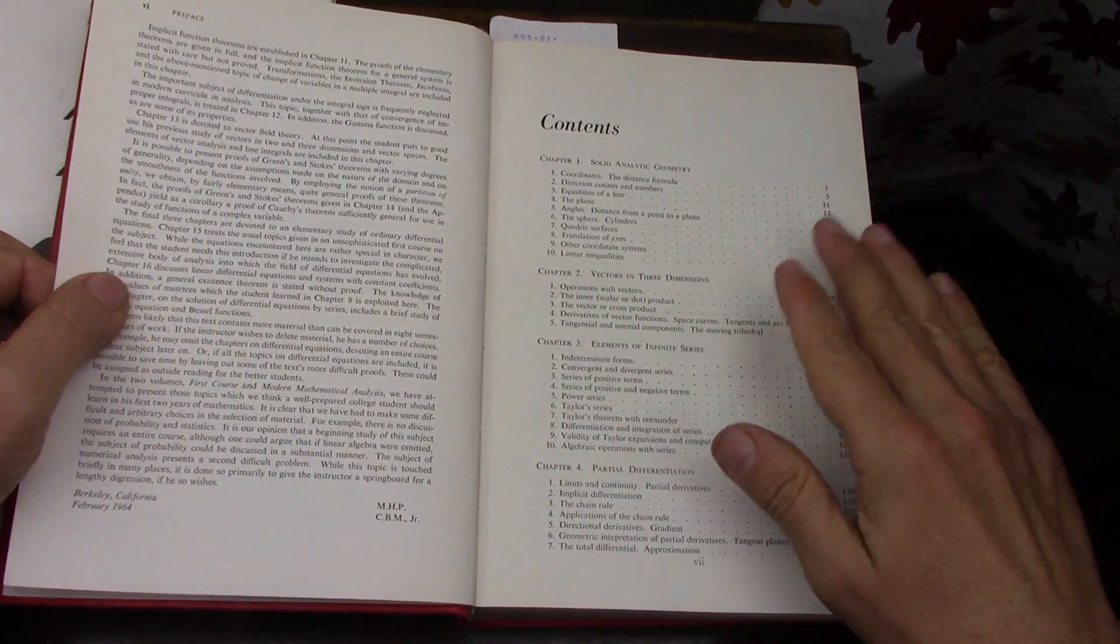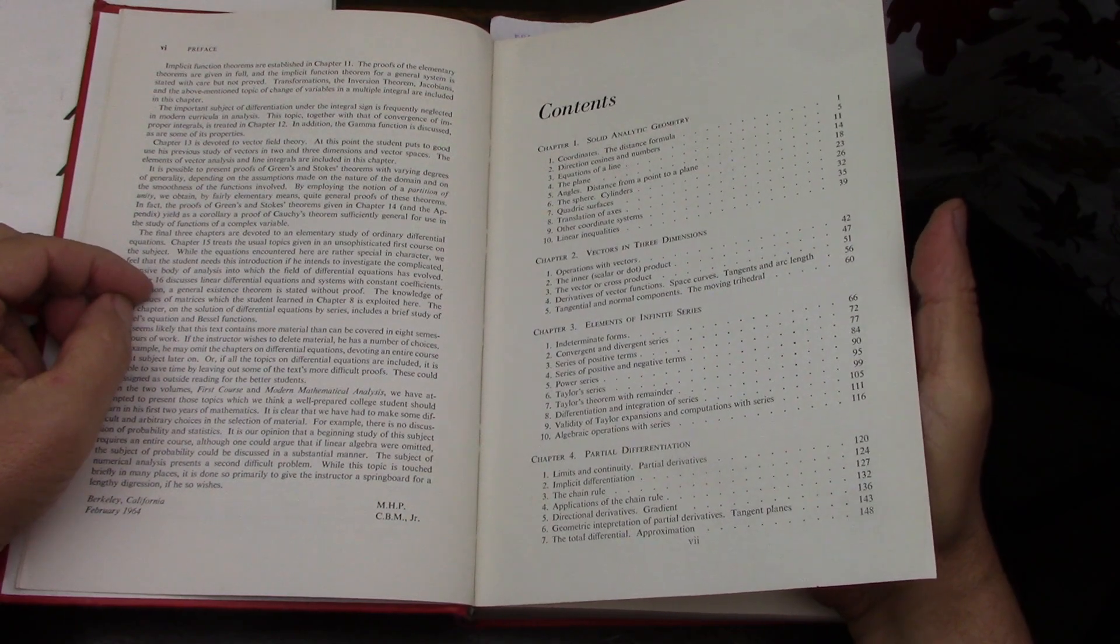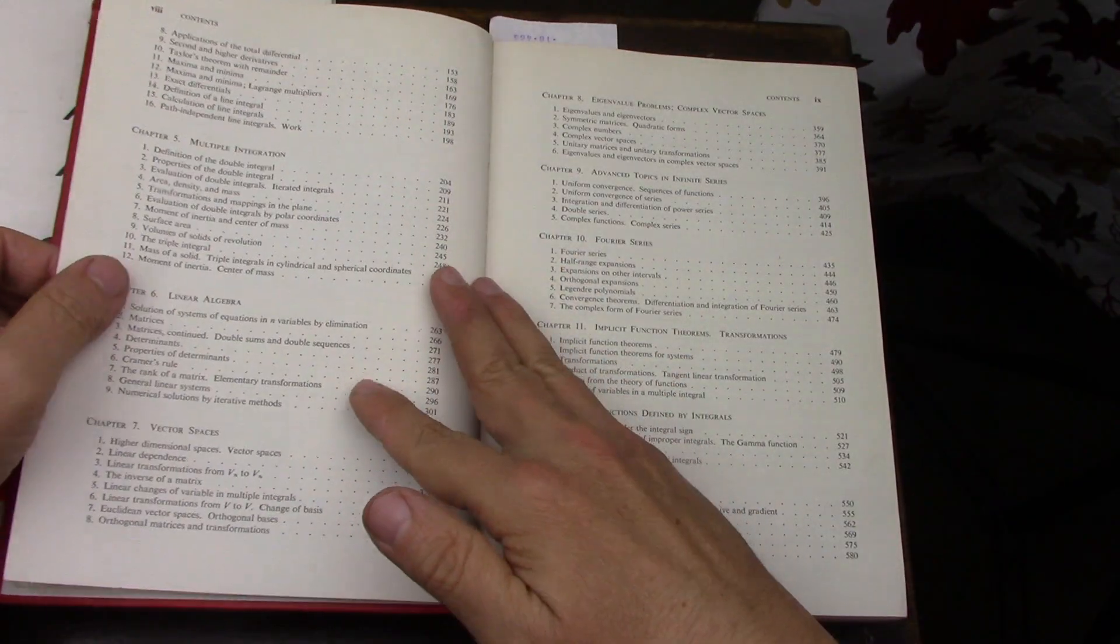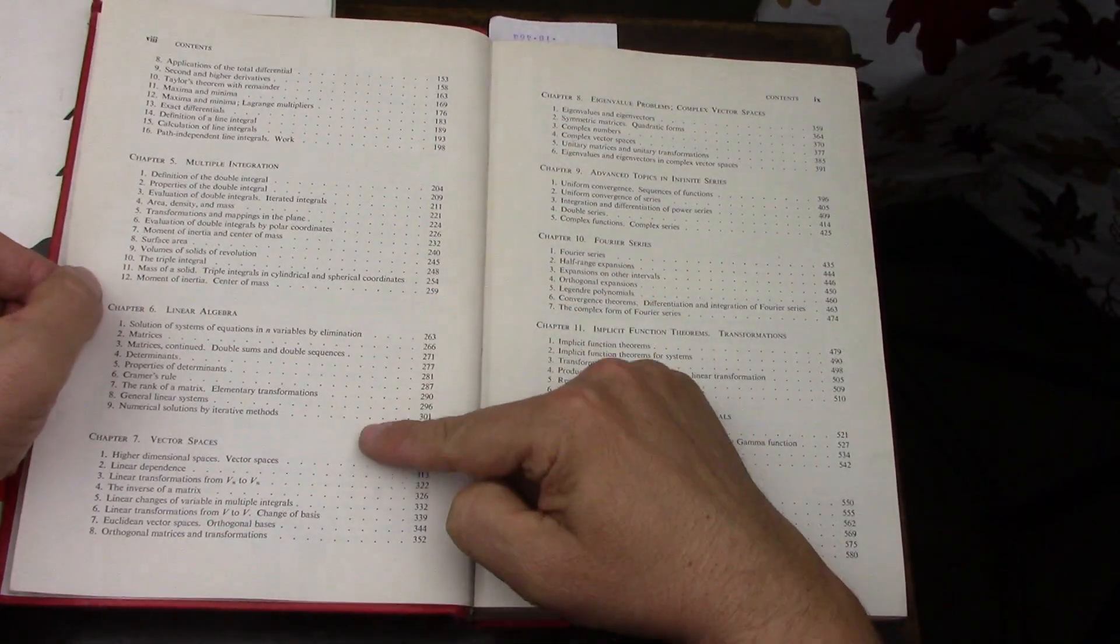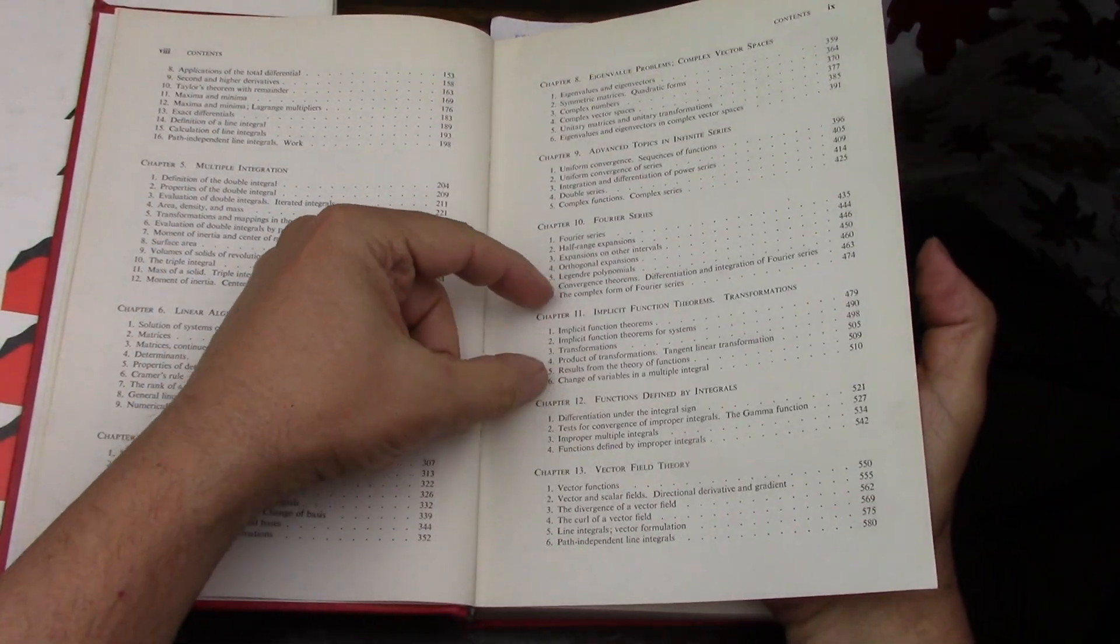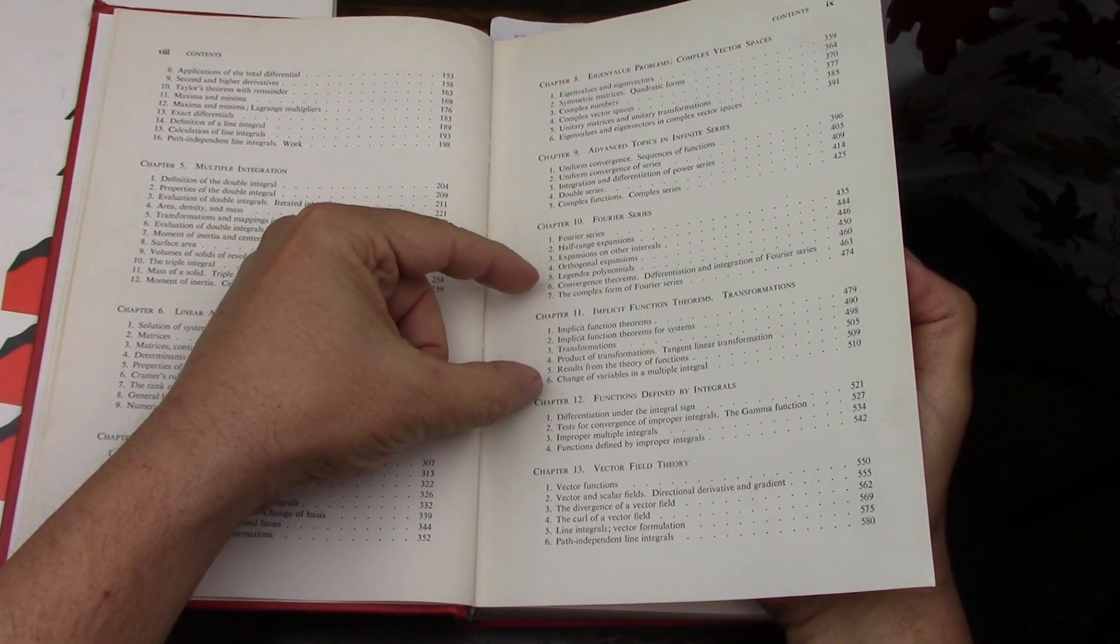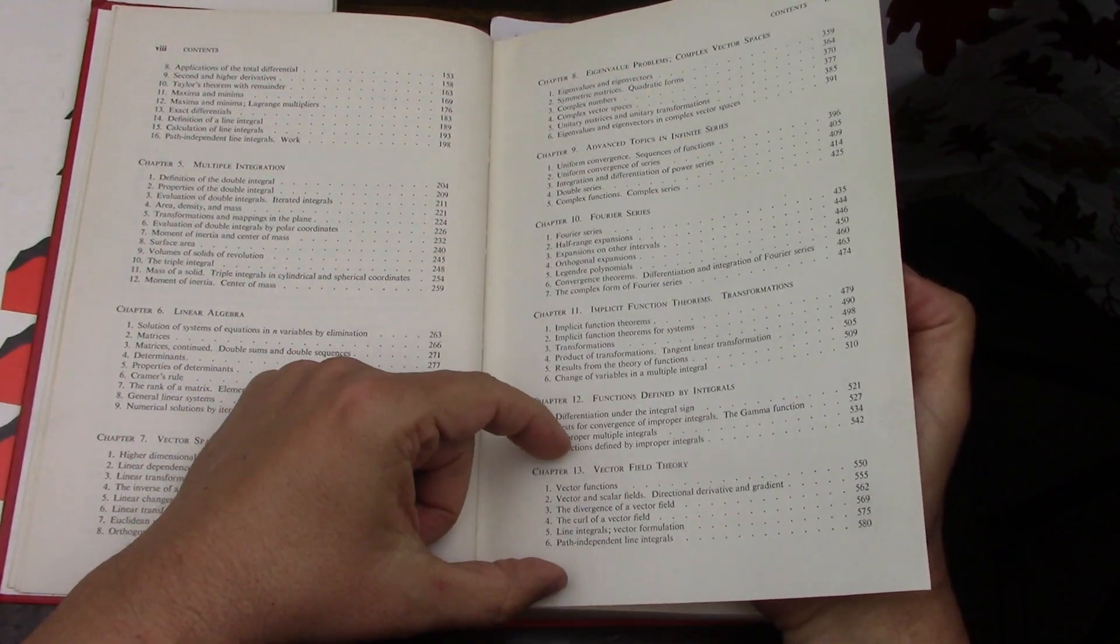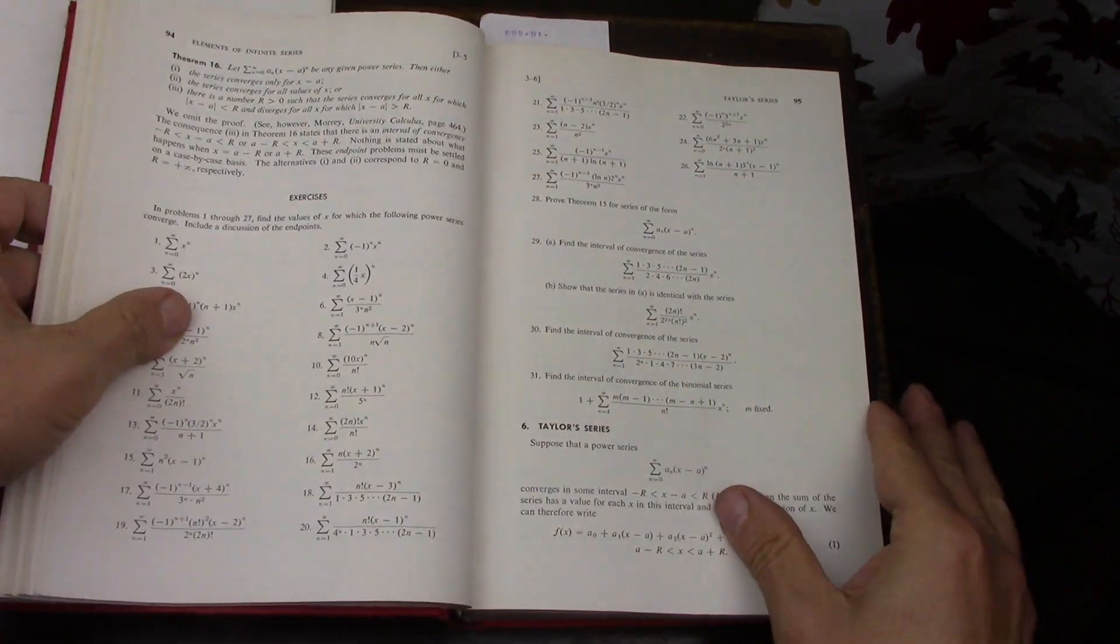So I started going through it, and no, it is not an analysis book, but it's an advanced calculus book. And it's got a lot of stuff, like vector spaces, linear algebra, a bunch of advanced topics, things that are also treated in the analysis book by Protter and Morrey, but now at a lower level, but also really well done. Vector field theory, some differential equations, really good book.